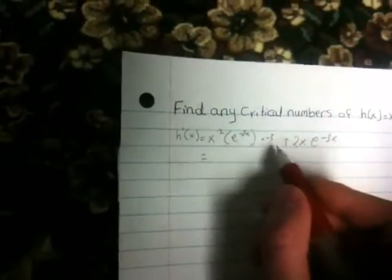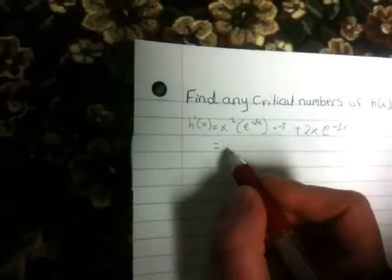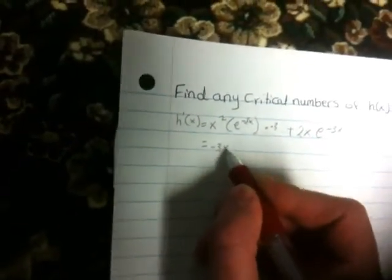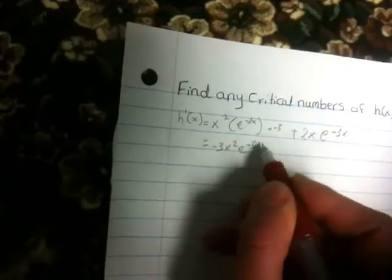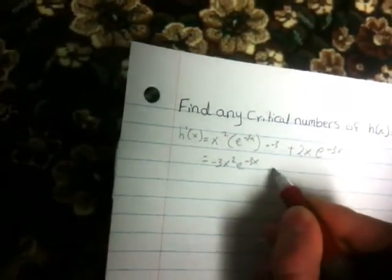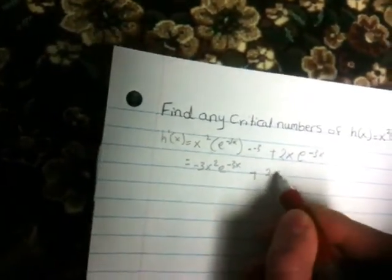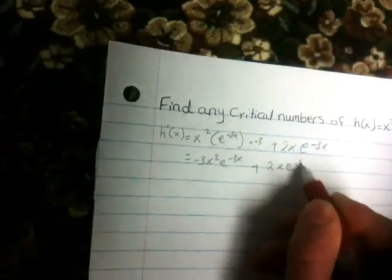Now, we have, if we multiply negative 3 times x squared, we have -3x²e^(-3x) + 2xe^(-3x).